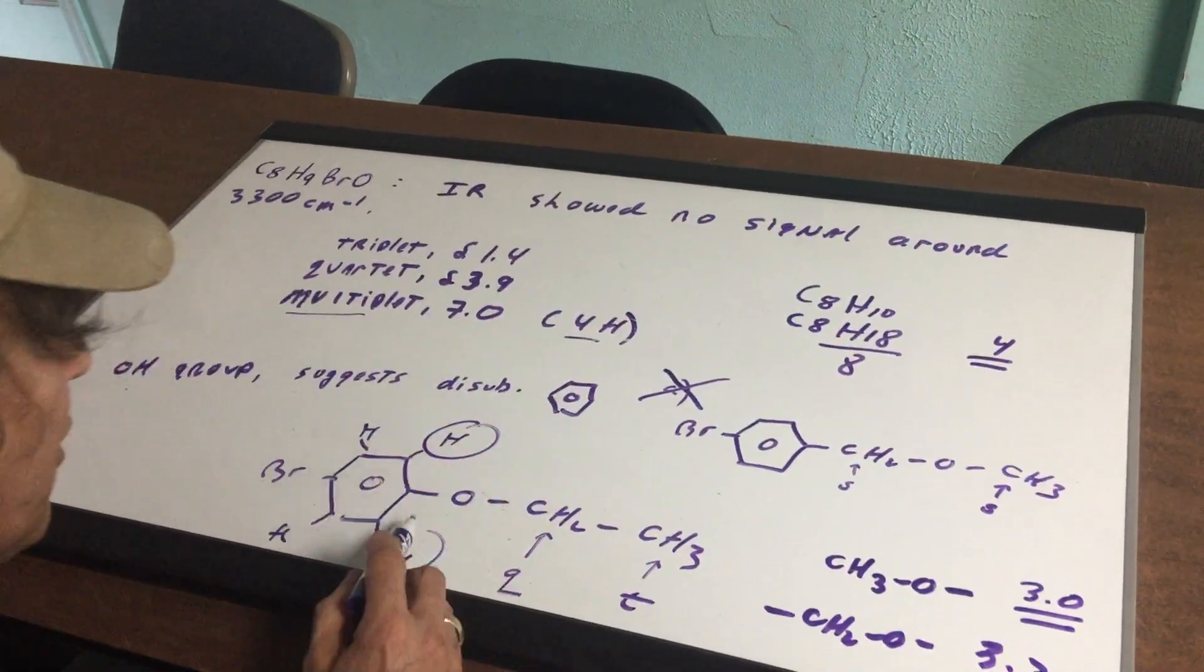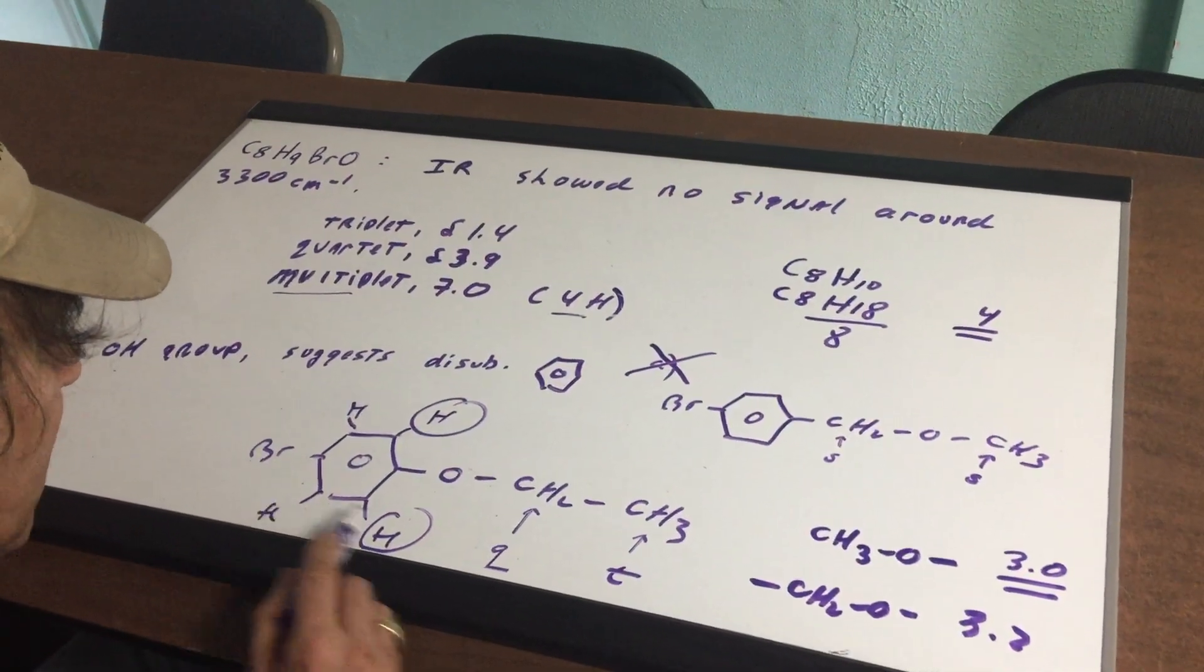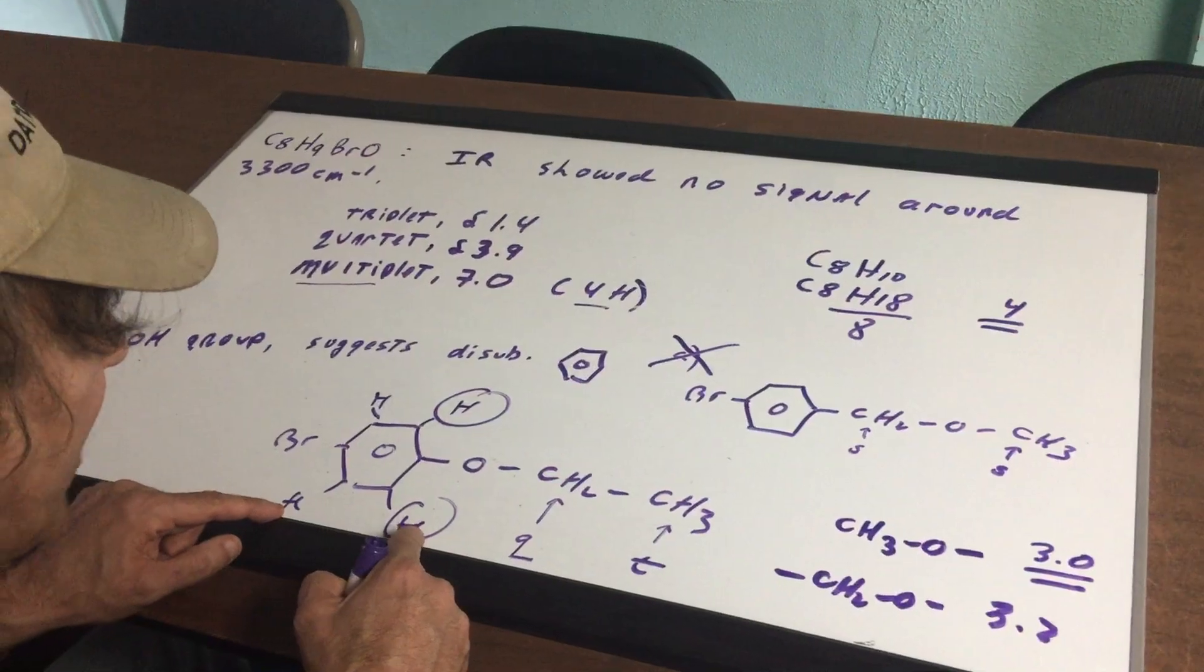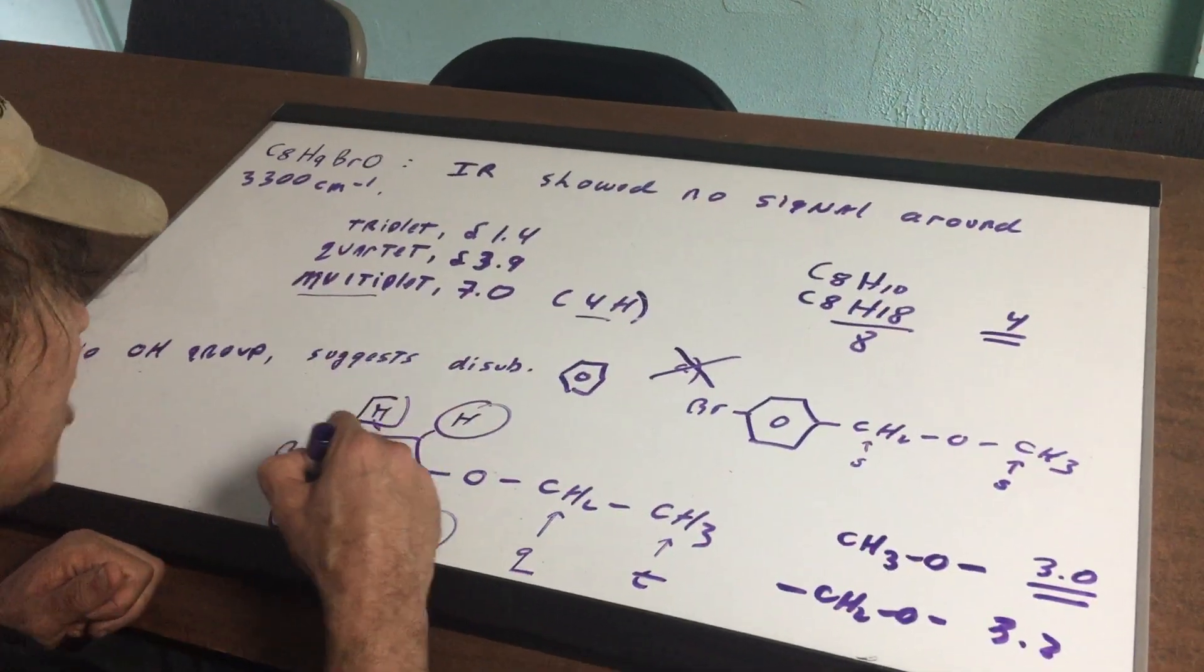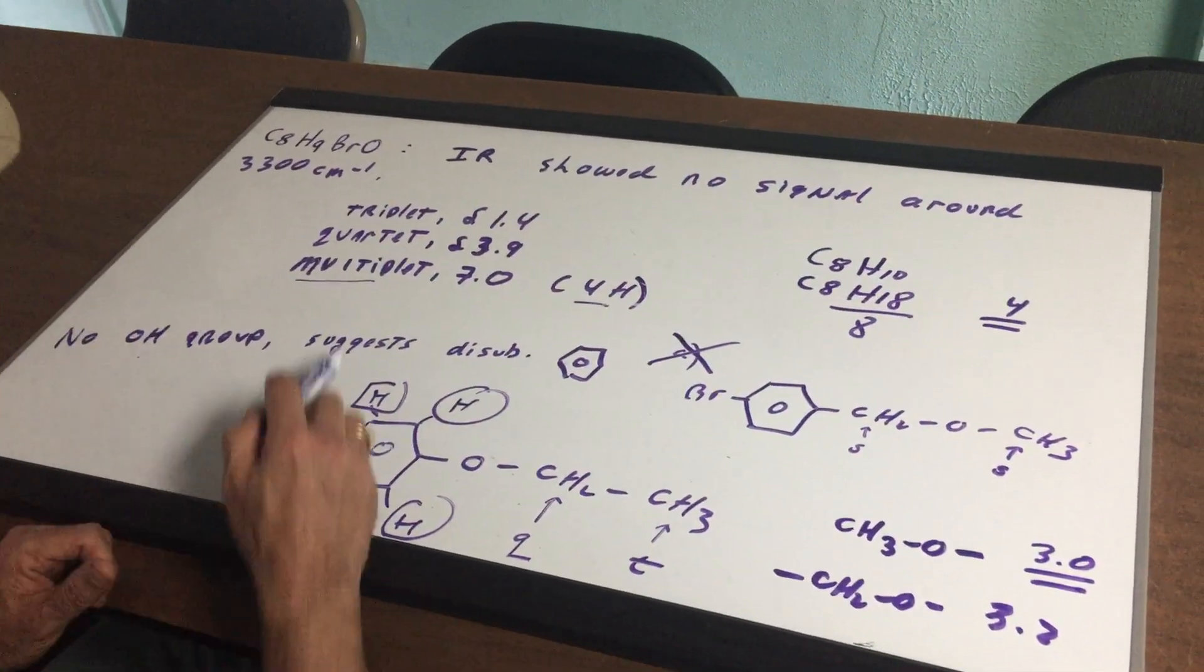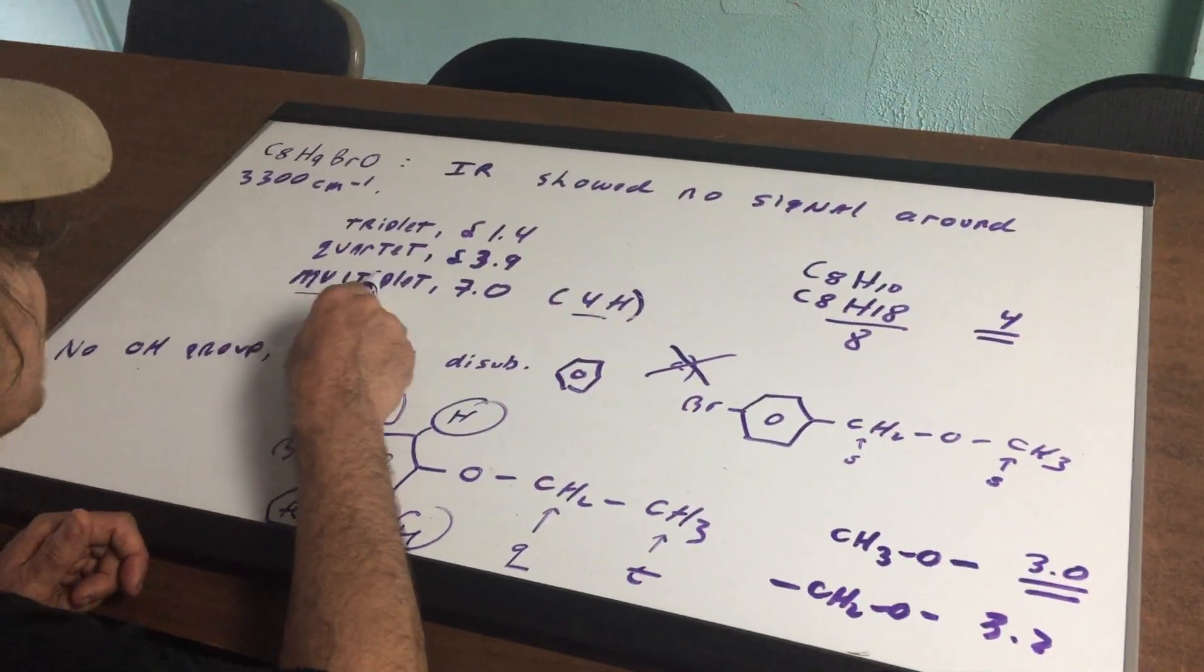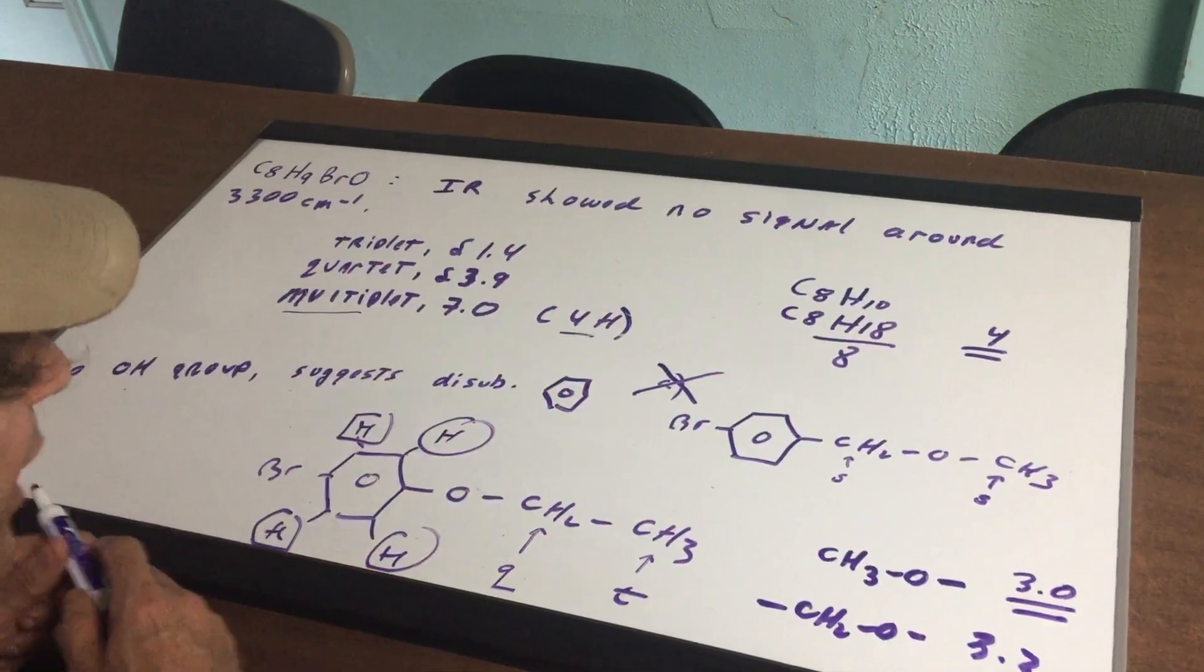If we circle these, those H's would be split by the neighbor. This would be split into a doublet. And this H would be split into another doublet. And these are different H's. So you would get a doublet of doublets. This doublet of doublets is sometimes very close, and will show up as a multiplet. So that would justify the multiplet at around 7.0 for four H's.